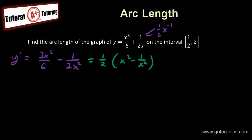Now that I have something like this, I just need to plug it in into the formula. I know that from A to B is 1 half to 2. So my equation arc length is A to B square root of 1 plus y prime square dx.